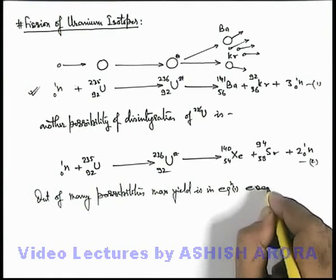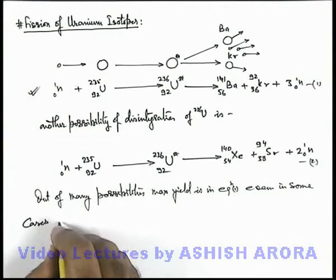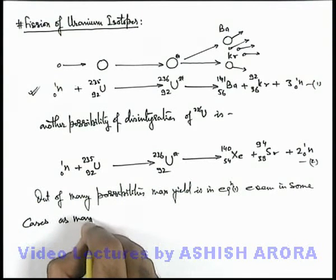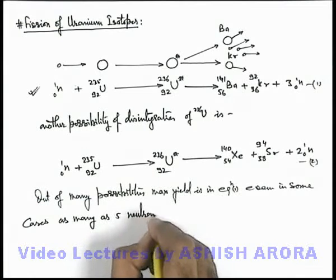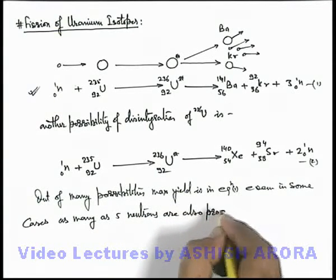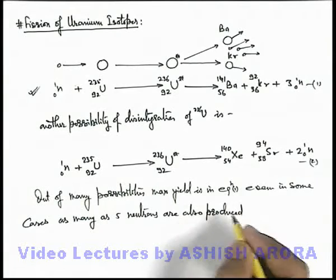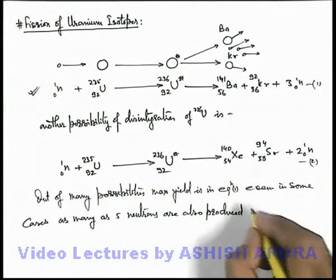Even in some cases, as many as five neutrons are also produced. But as a random phenomenon, the yield of this is maximum, and other cases are also there.